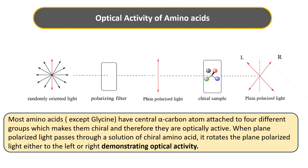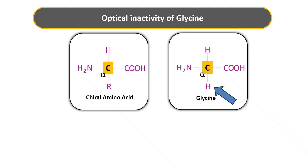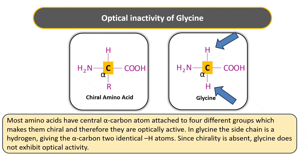The exception here is glycine, which does not show optical activity. Optical activity requires a chiral carbon — the central carbon must have four different groups attached. In most amino acids that is true, but in glycine the side chain is just a hydrogen, giving the alpha carbon two identical hydrogen atoms. Since chirality is absent, glycine does not exhibit optical activity. So most amino acids have a central alpha carbon attached to four different groups making them chiral and optically active, but in glycine chirality is absent.